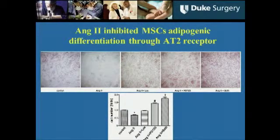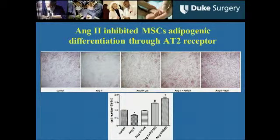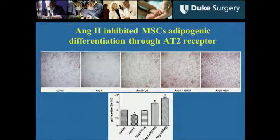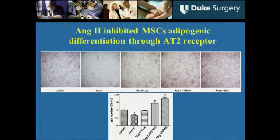We then determined which receptors are responsible for the anti-adipogenic effect of angiotensin II. We used the receptor 1 blocker losartan and the receptor 2 blocker PD123. With angiotensin II plus losartan, the angiotensin II inhibitory effect was abolished. With angiotensin II plus receptor 2 blocker, cell differentiation was increased compared to control, and further induced cell differentiation.